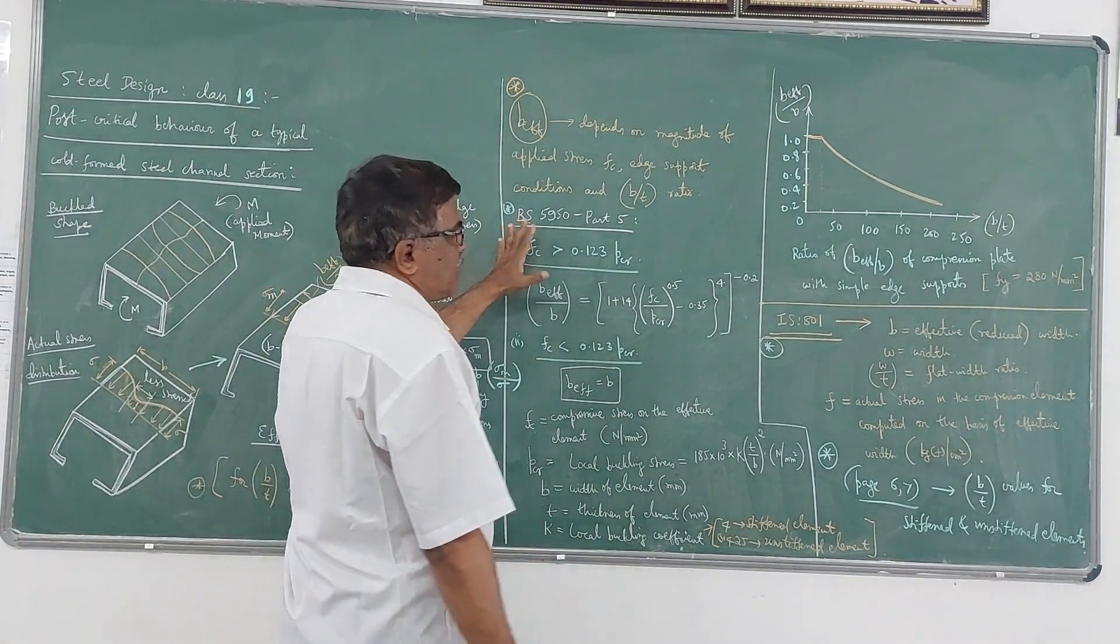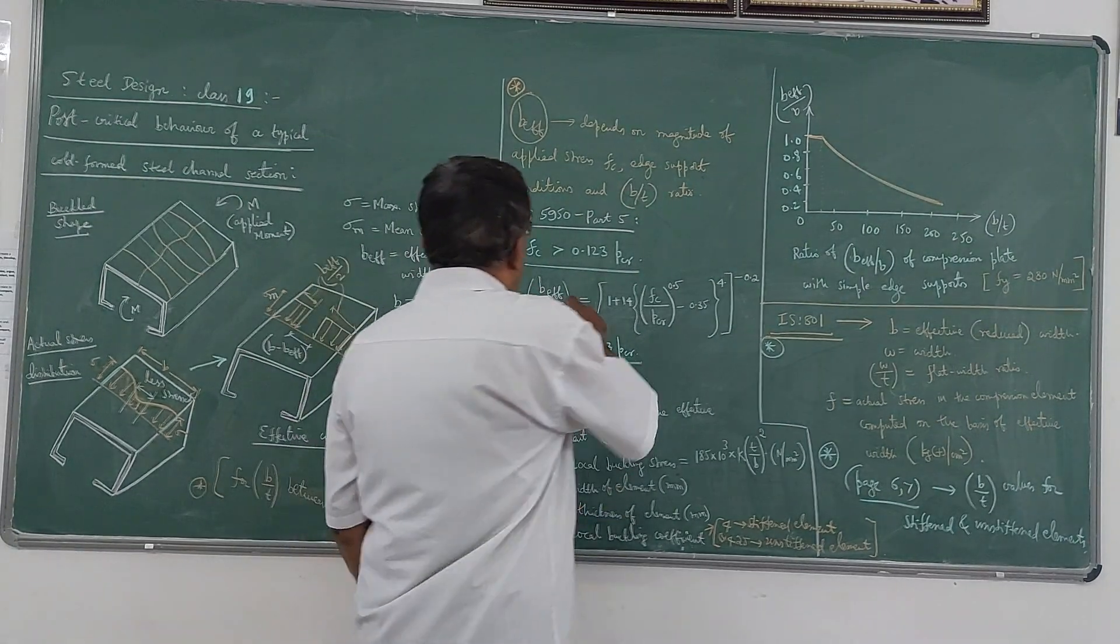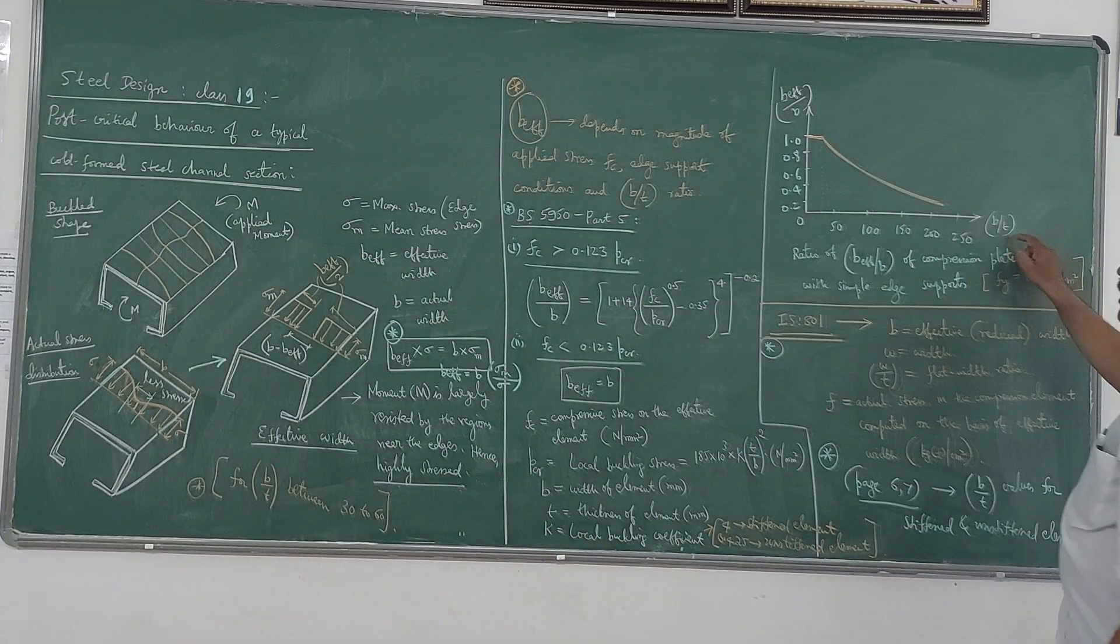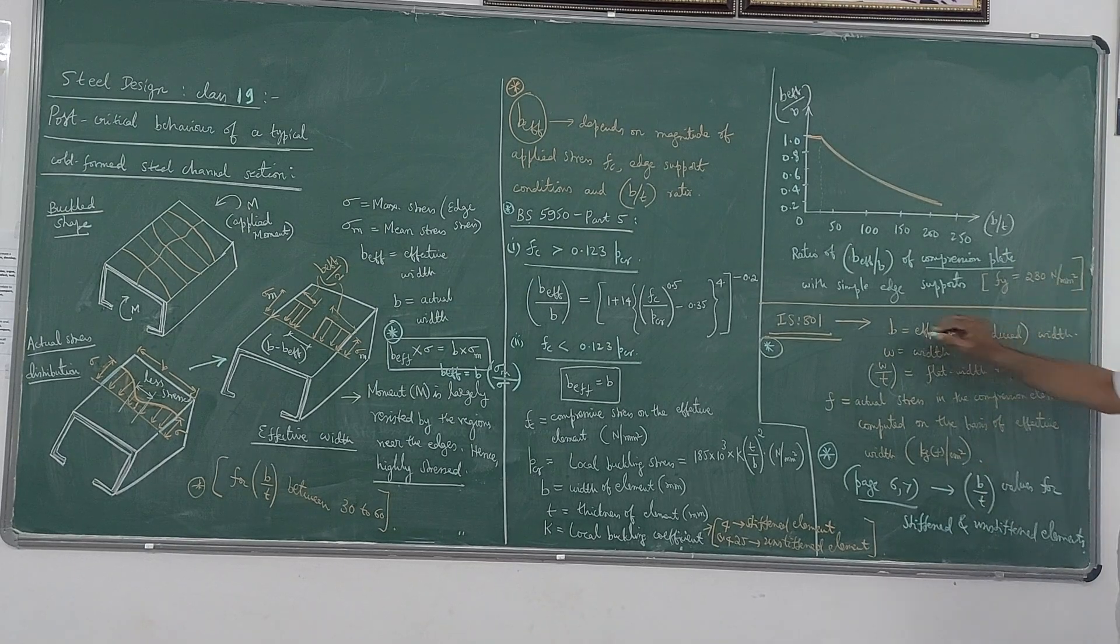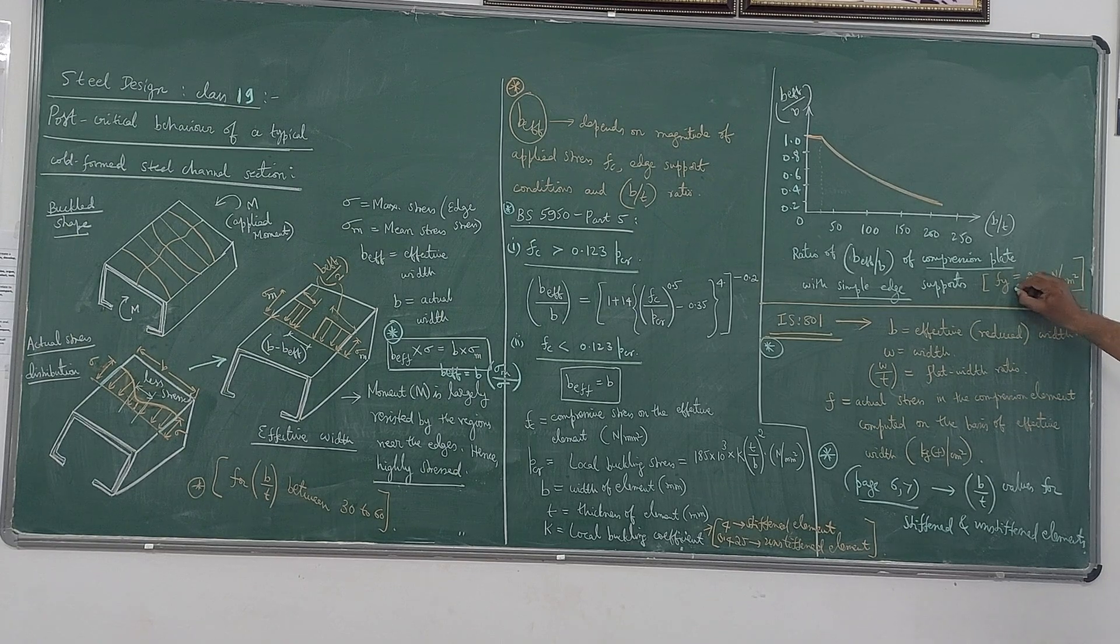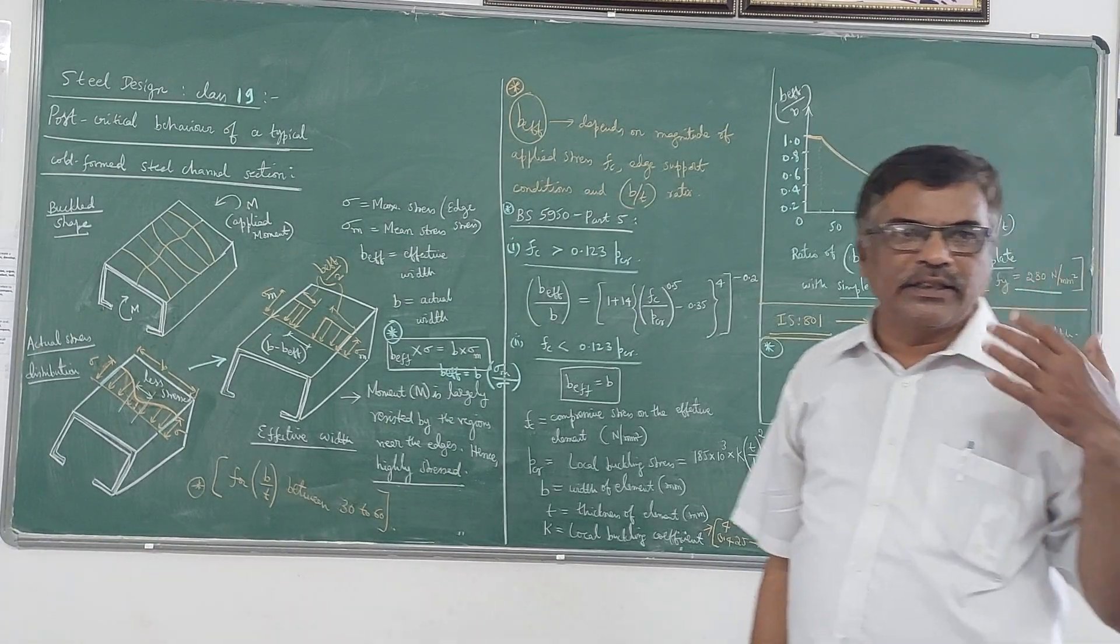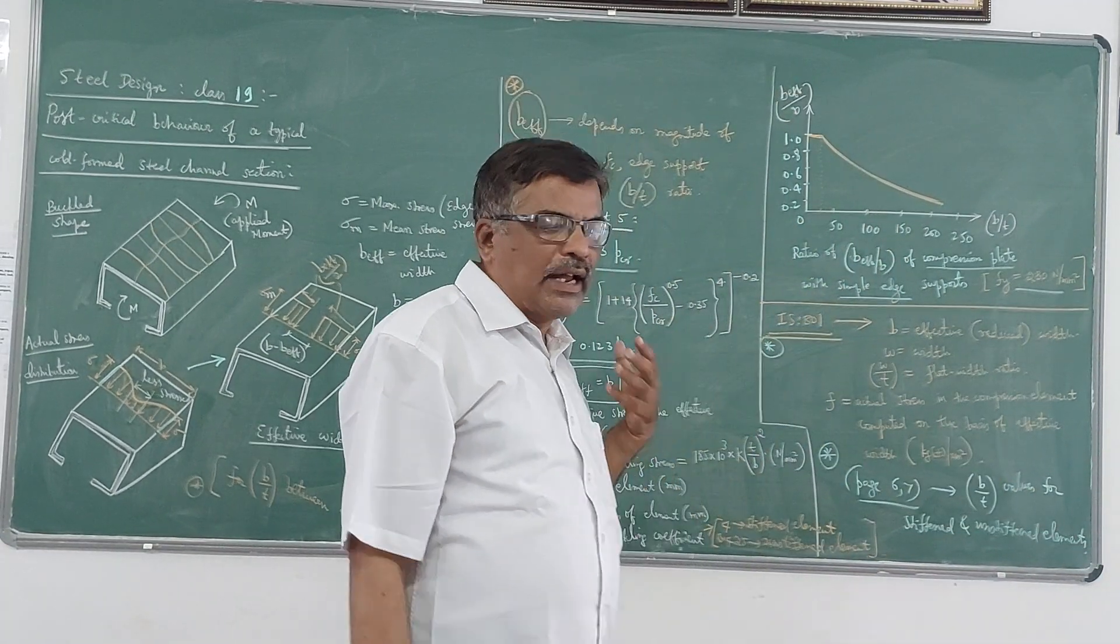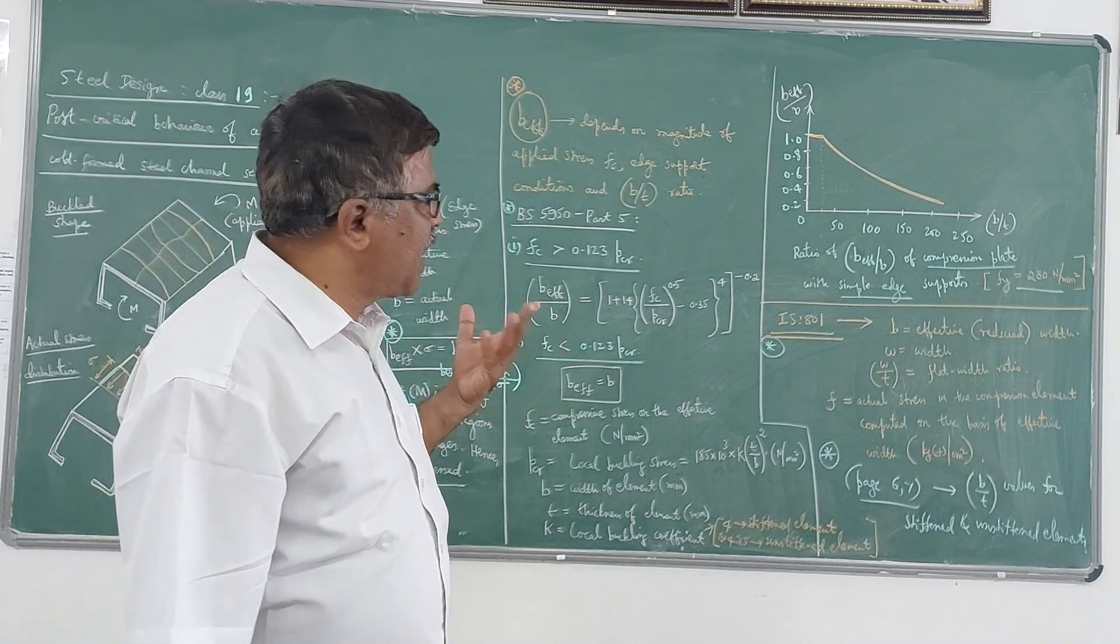So this is according to the British code. Now when you plot a graph of B_effective by B versus B by T for a compression plate with simple red support - that means the edges are simply supported - and taking Fy as 280 Newton per mm square. So I have told you that in the case of cold-form stiffened sections the Fy value can be enhanced up to 15 to 30 percent of the actual value.